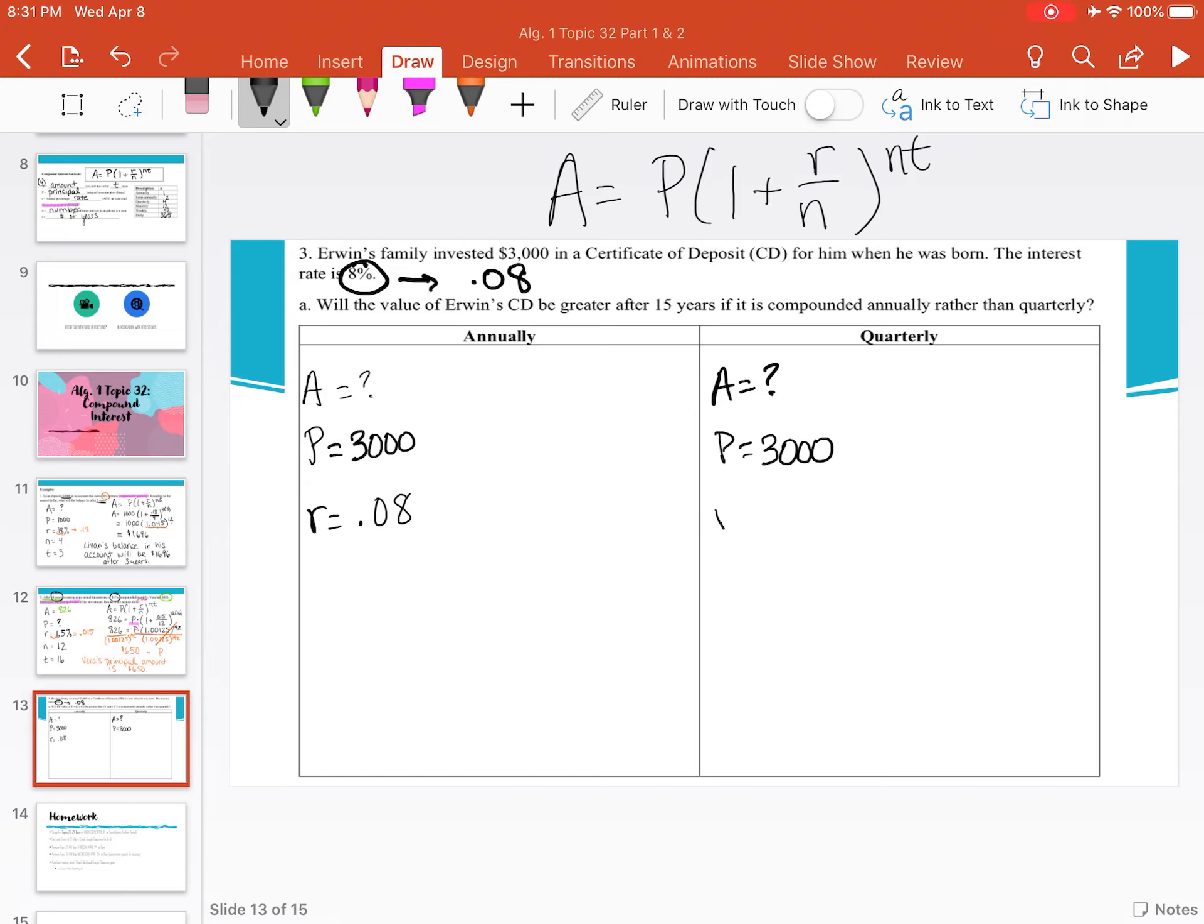So if we write that as a decimal, we get 0.08. Now here's where we change. The n value for annually is just 1, because annually means once per year. Whereas quarterly means 4 times. So our n on the right hand side is 4. Our t in both cases is 15, because that's how much time will have passed.